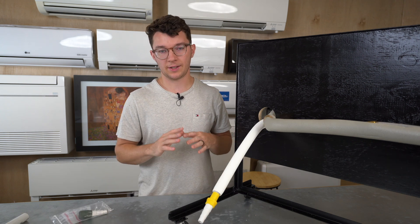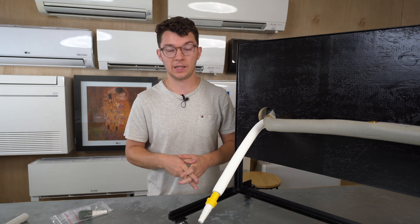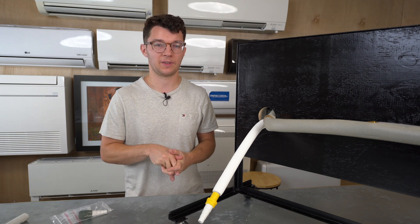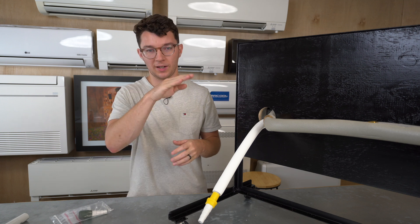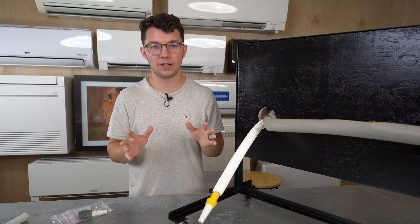If you're someone that doesn't want to use flex drain, you'd prefer to use hard PVC because maybe you're running a horizontal line and you want to clamp it to the wall and you don't want it to be droopy and you just want to completely avoid that, you can use hard PVC.